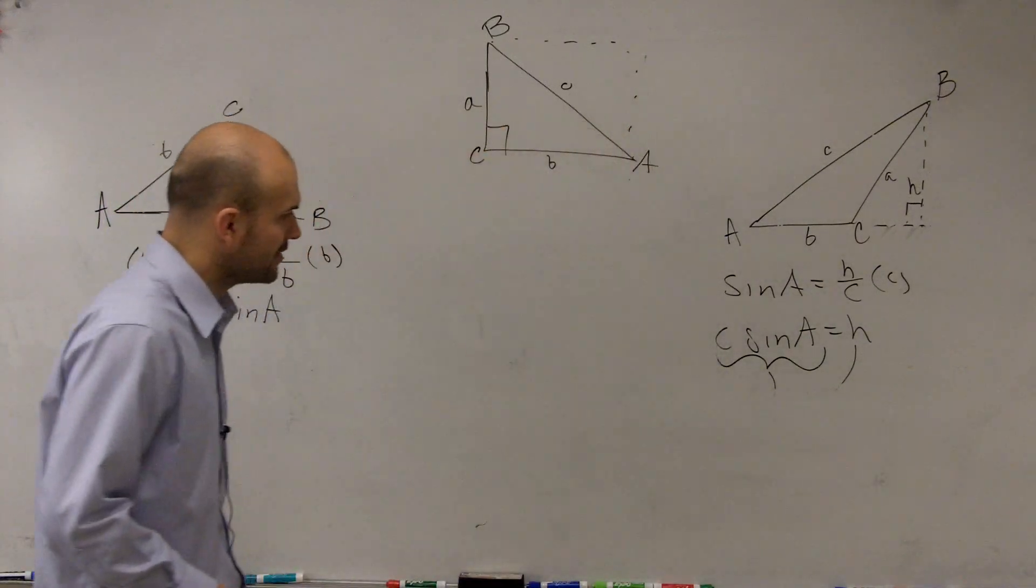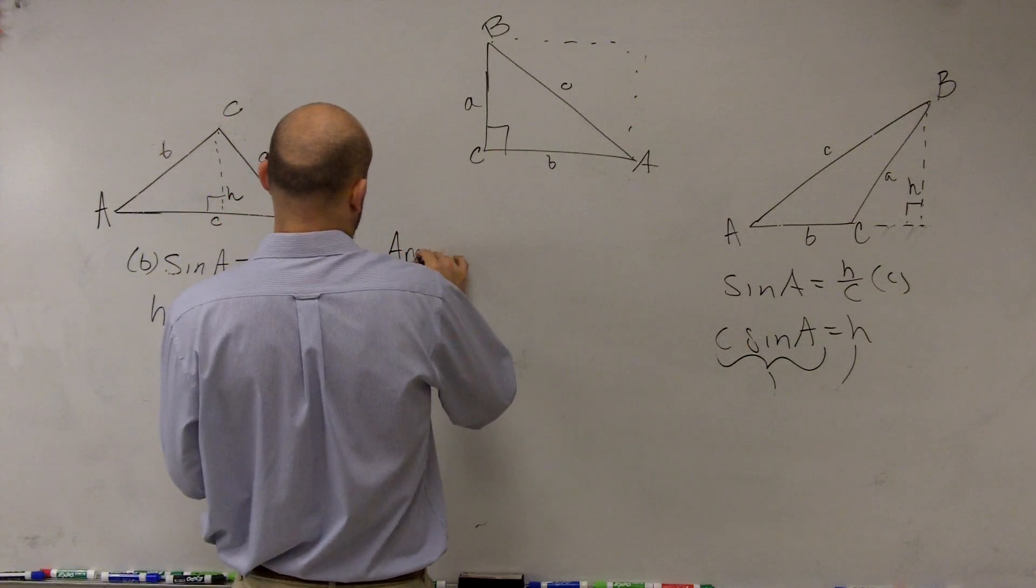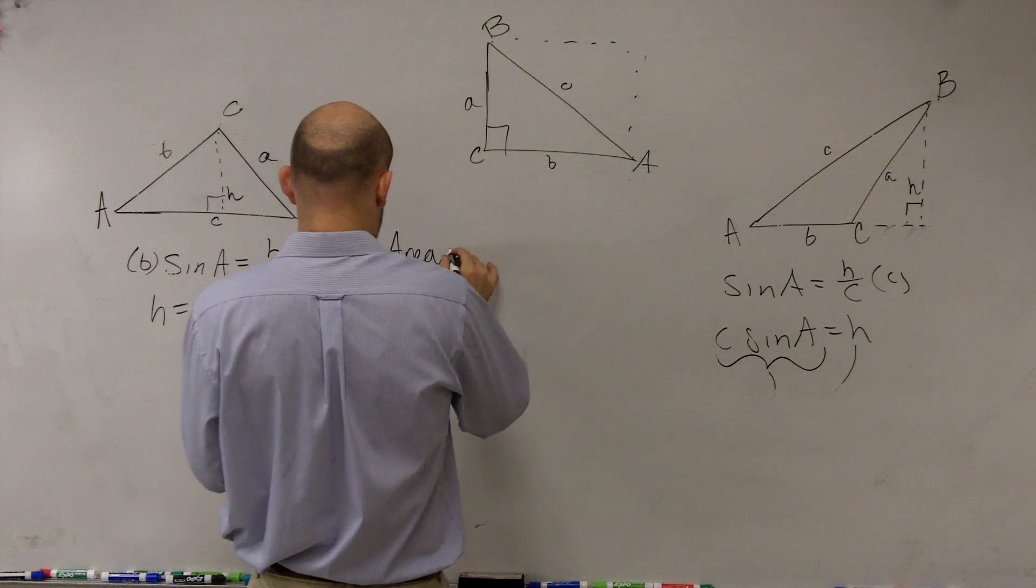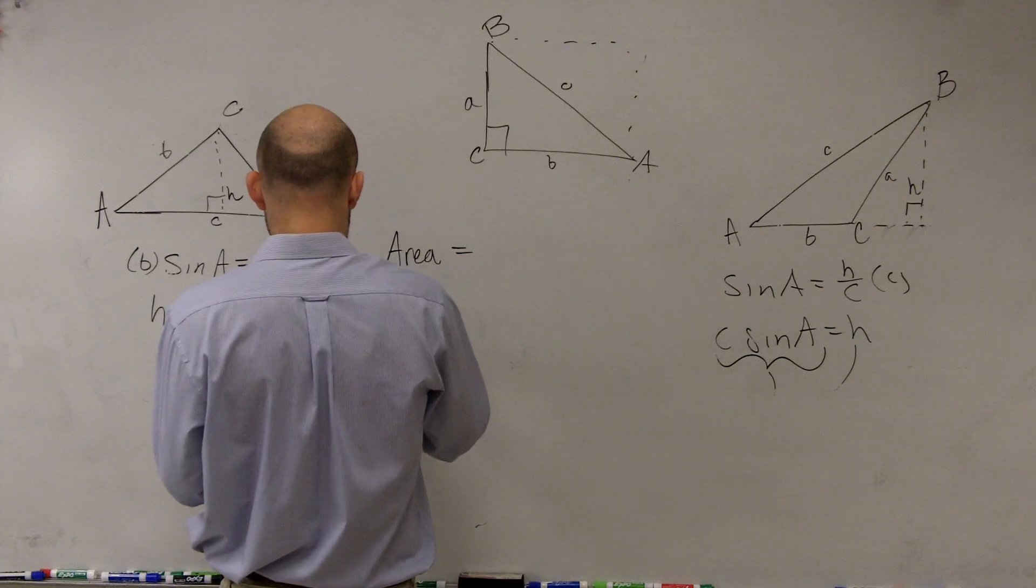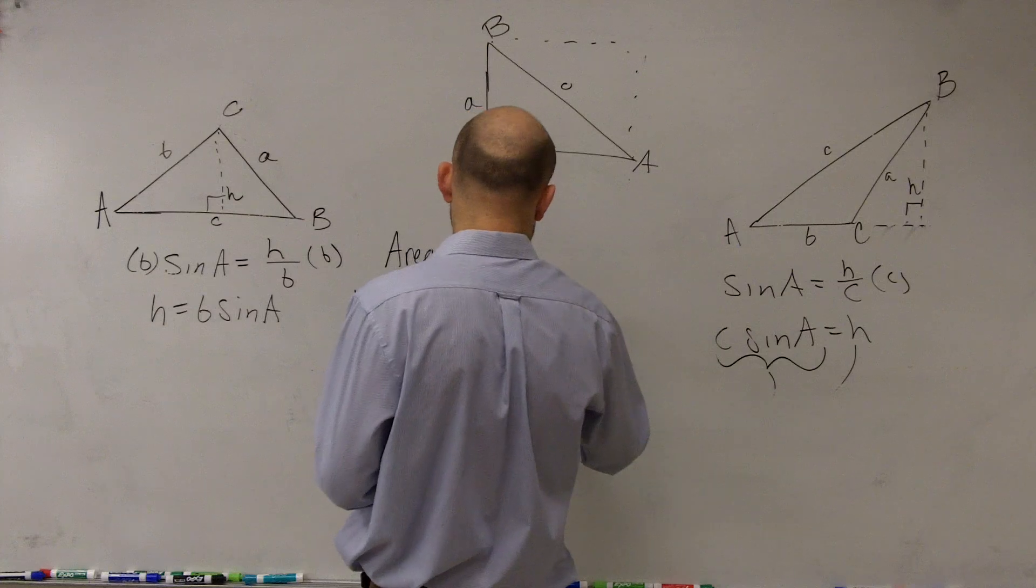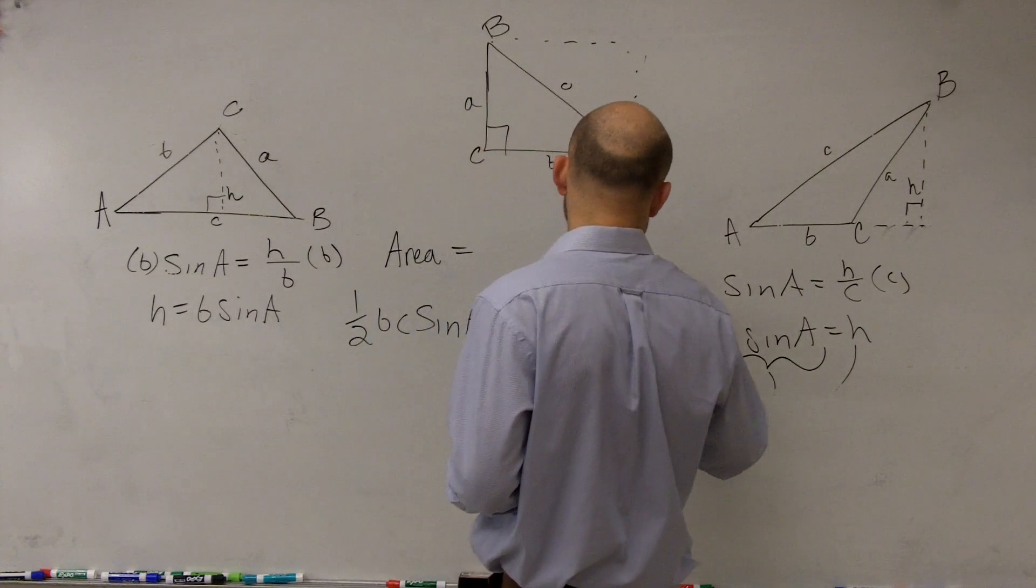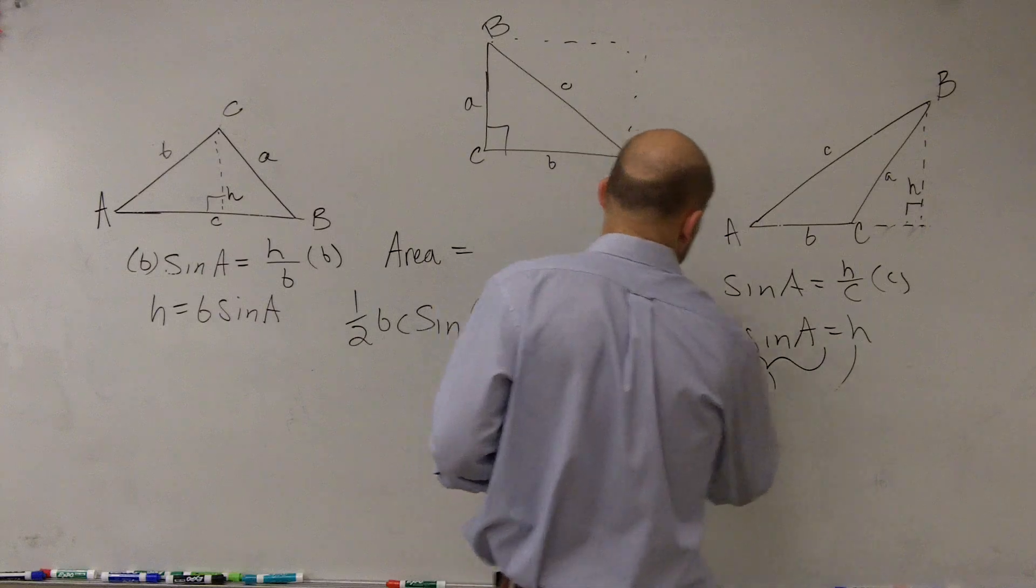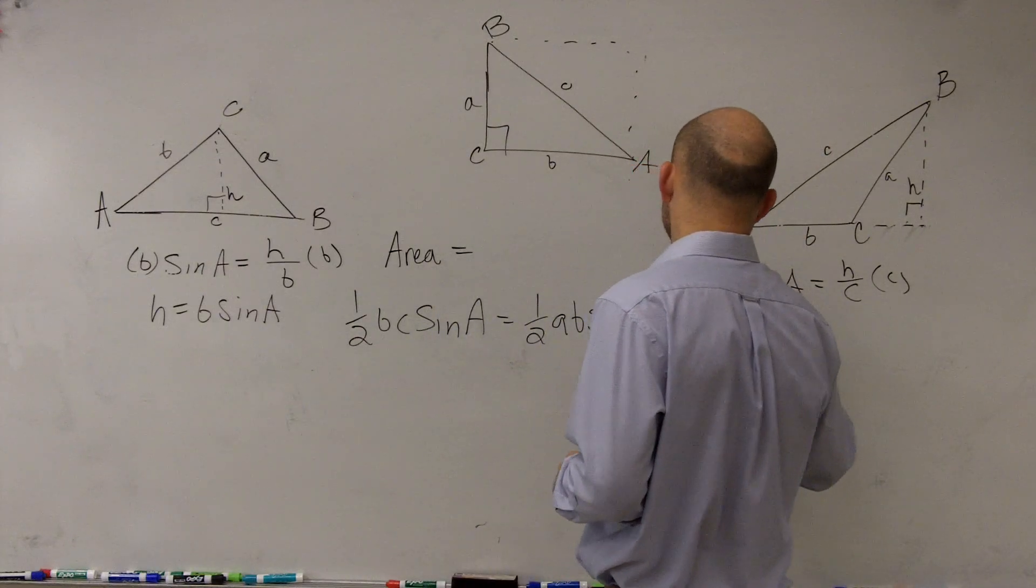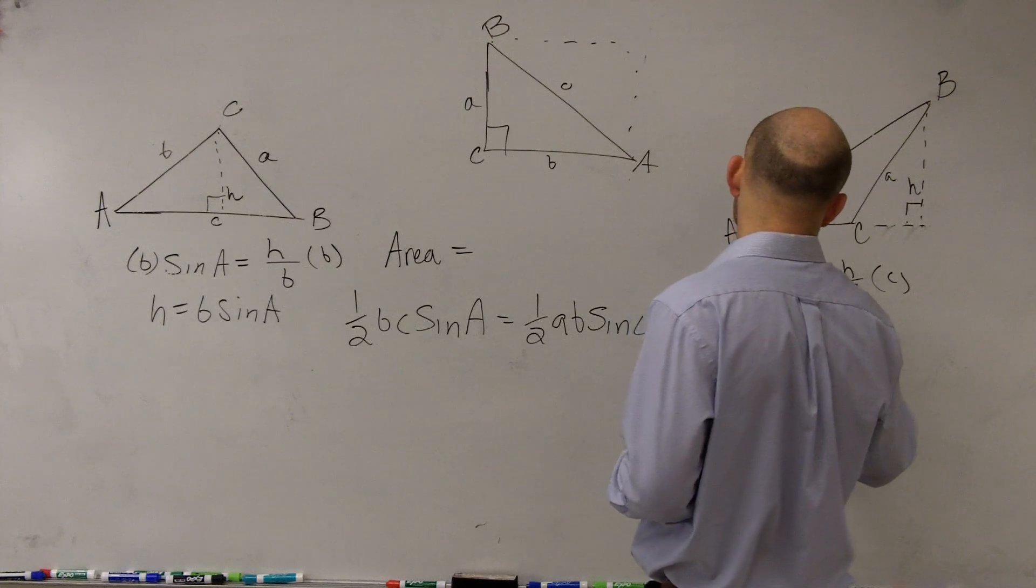So the formulas for area of a triangle go as follows. So we could say the area is equal to one half b times c, sine of a, which is equal to one half a times b, sine of c, which is equal to one half, let's see, a times c, sine of b.